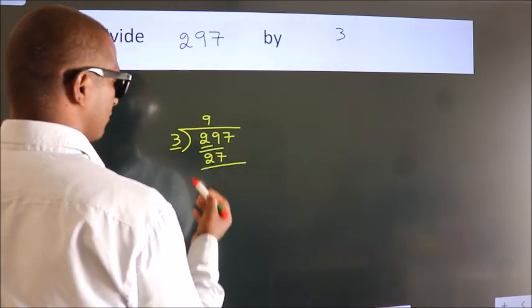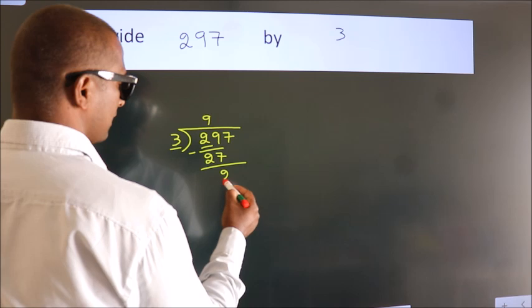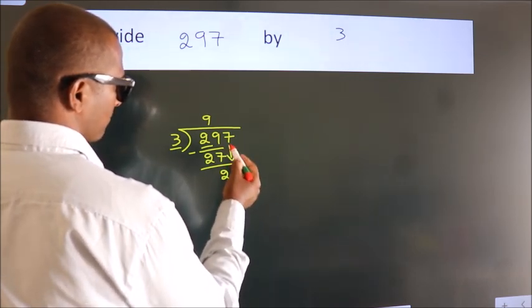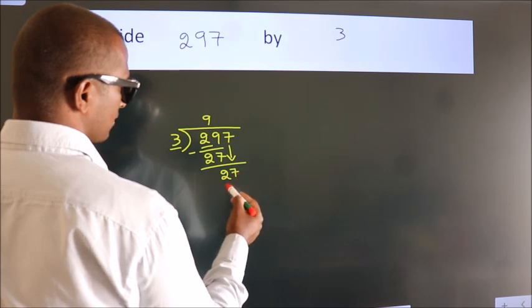Now we subtract and get 2. After this, bring down the next number. So 7 comes down, giving us 27.